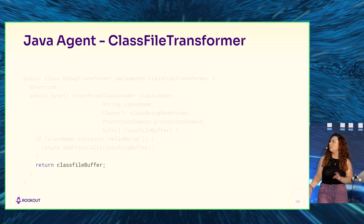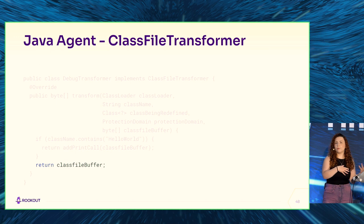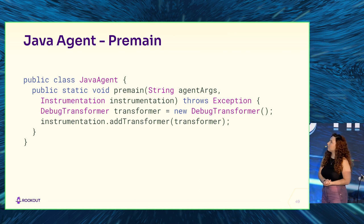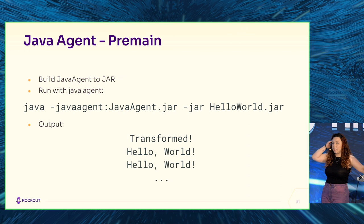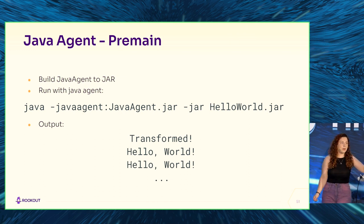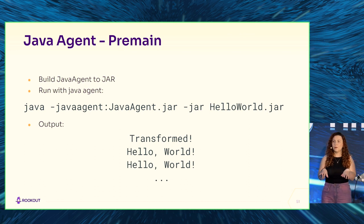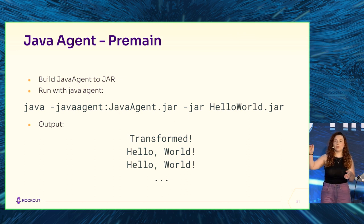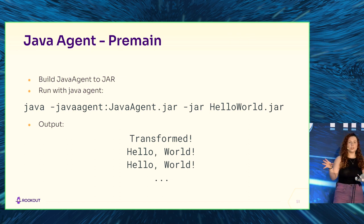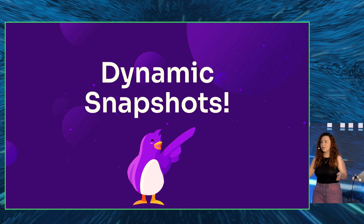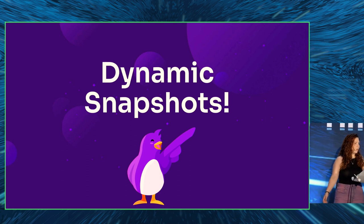Our transform function takes the bytecode, adds a call to print, keeps all the rest of the bytecode the same, and returns it. In our transformer we filter over the class name we want - in this case hello world - and add a print call to that specific class, returning the original bytecode for all other classes. Running our Java agent without recompiling the hello world jar, we get 'transformed' printed - that's what hello world is now printing before going into its while-true loop of printing hello world. We just changed the hello world class.